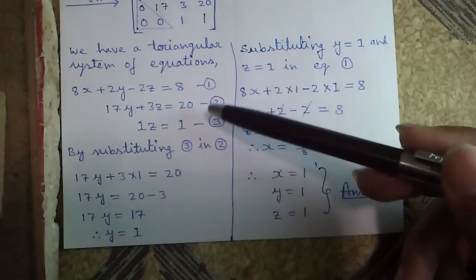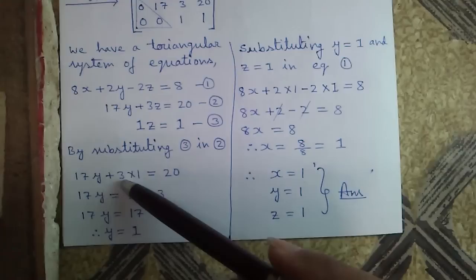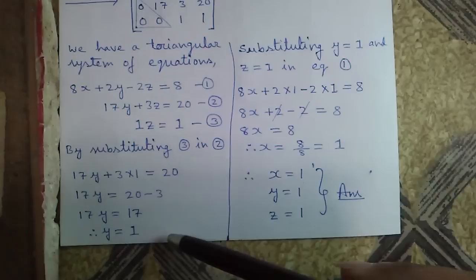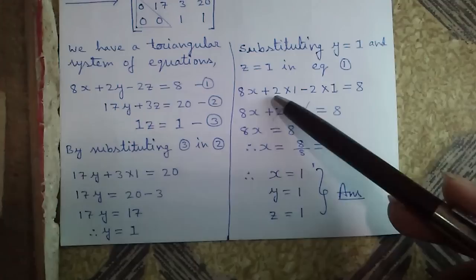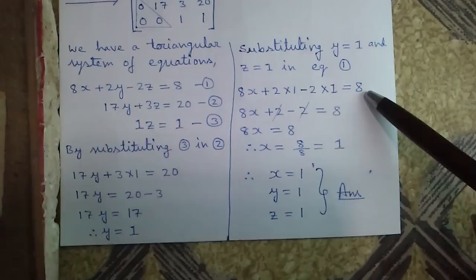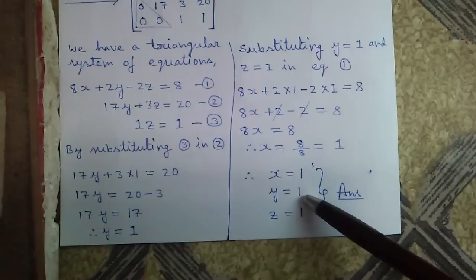Substituting equation 3 into equation 2, we get 17y plus 3 times 1 equals 20. So 17y equals 17, therefore y equals 1. Substituting y equals 1 and z equals 1 into equation 1, we get 8x plus 2 minus 2 equals 8, so 8x equals 8, and x equals 1. So x equals 1, y equals 1, and z equals 1 — this is our required solution obtained by Gauss elimination method.